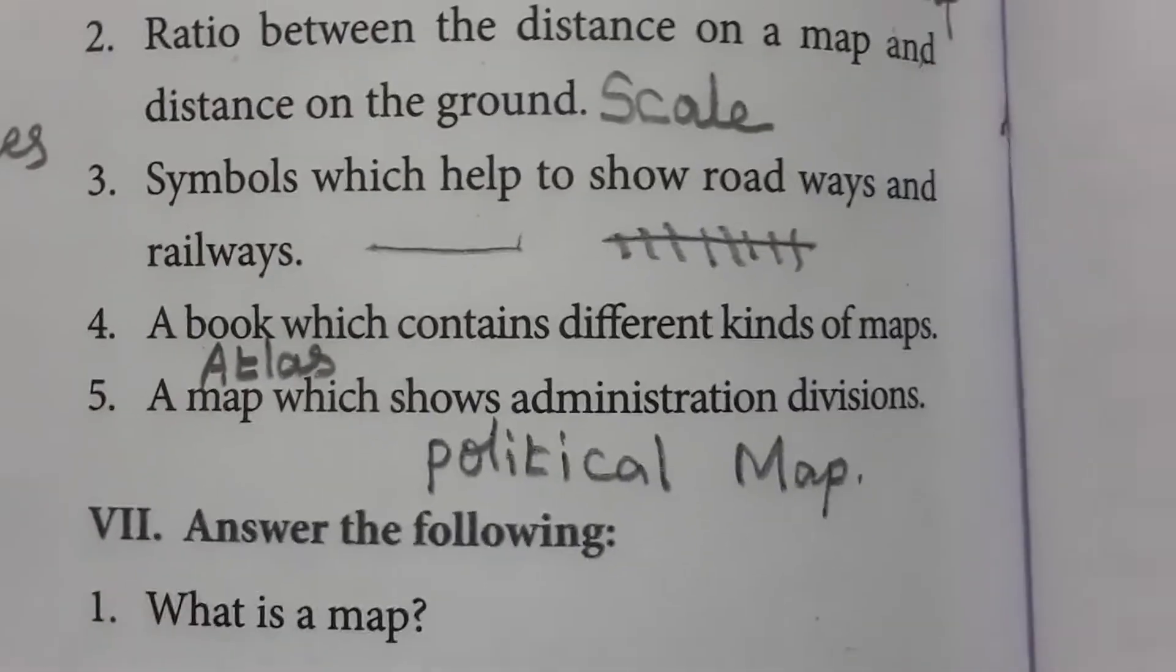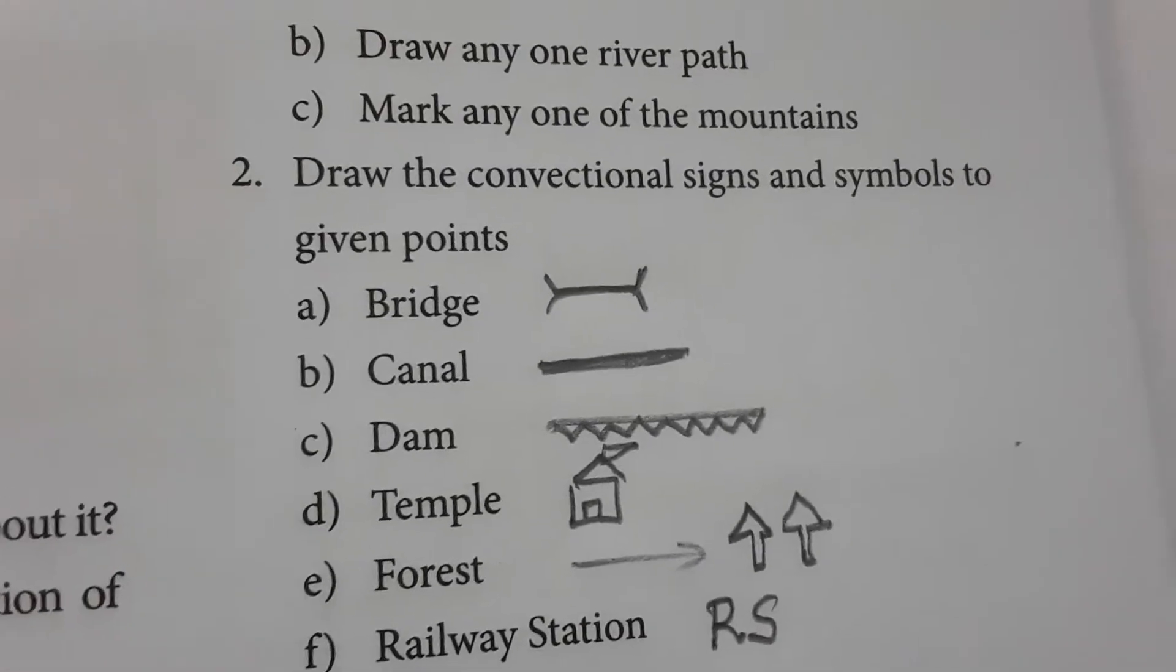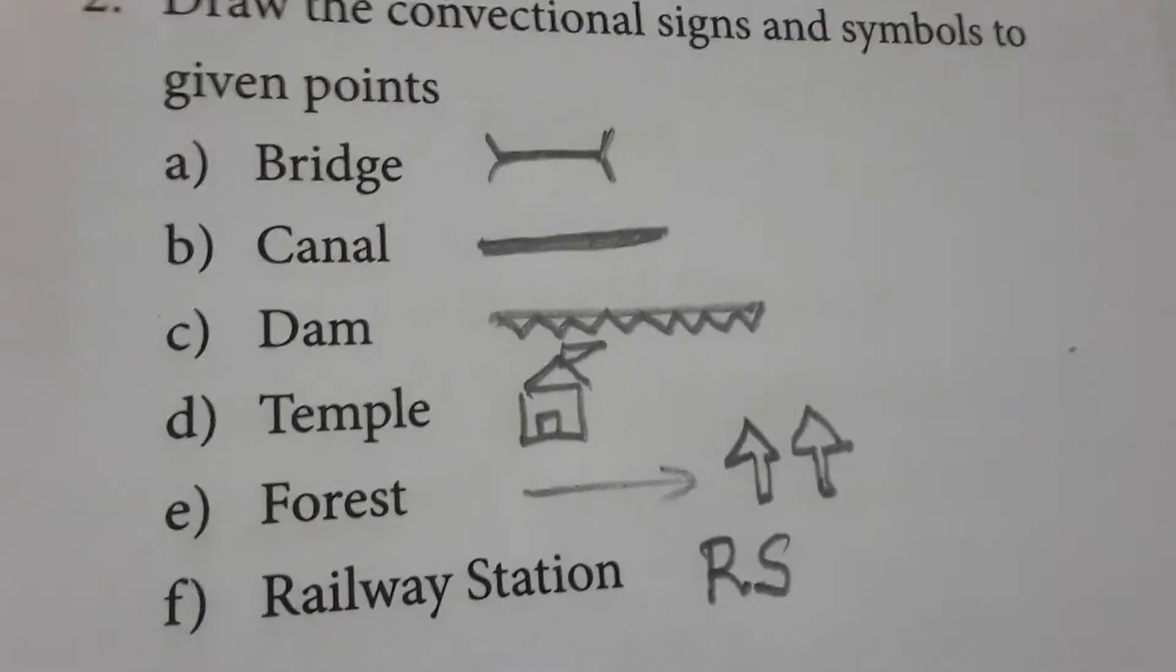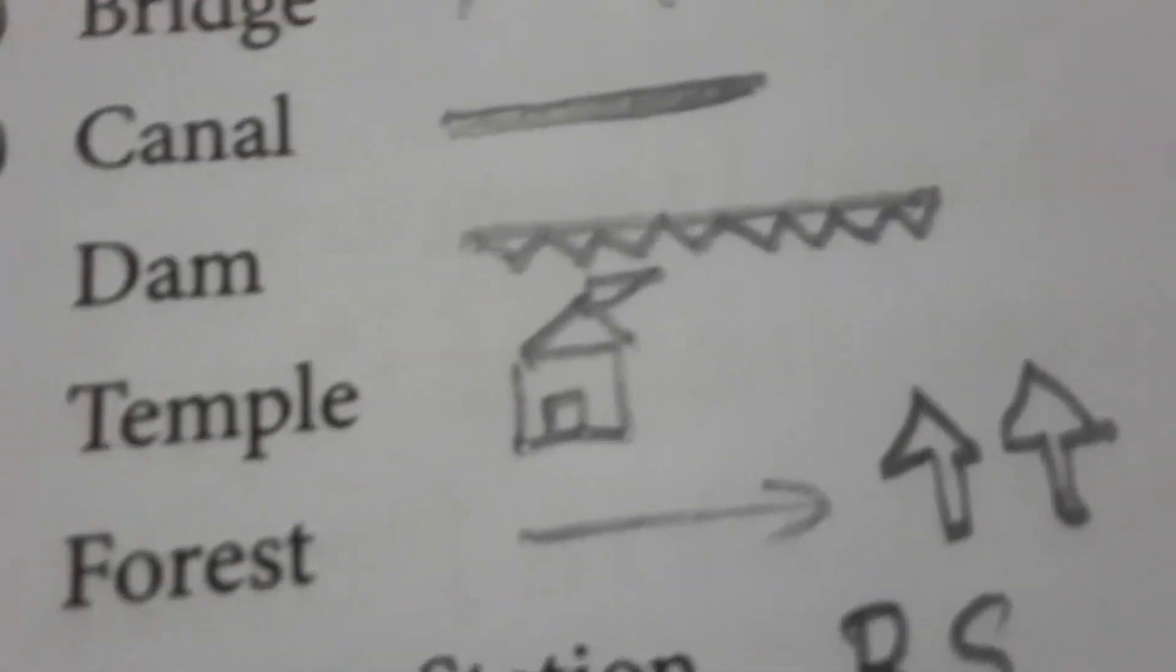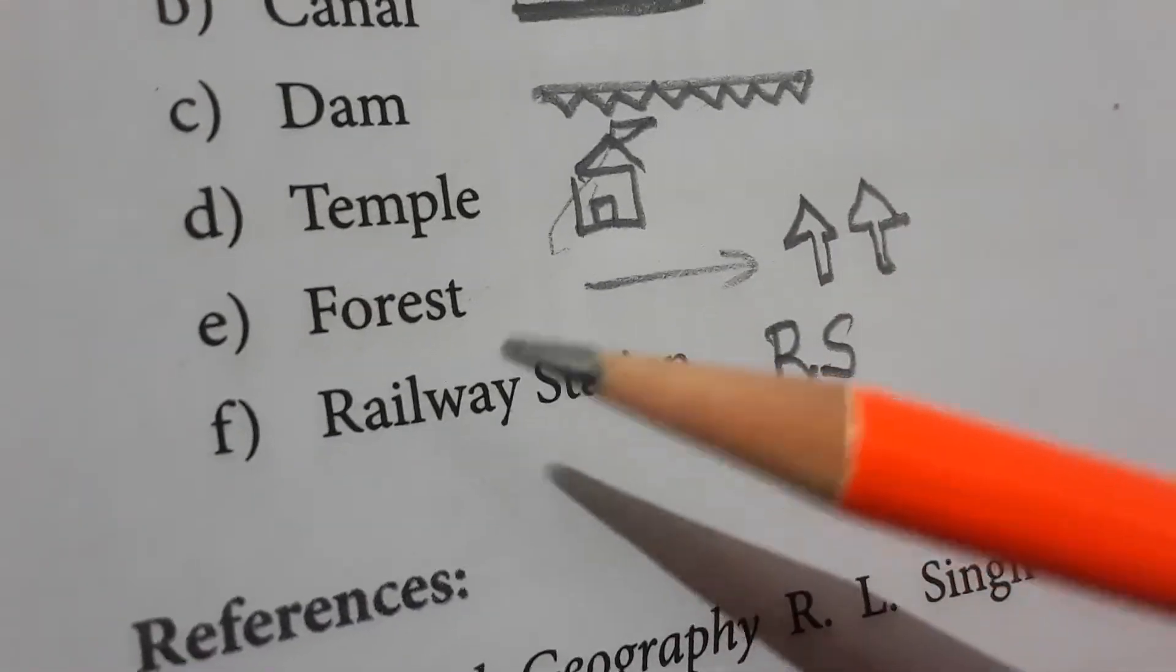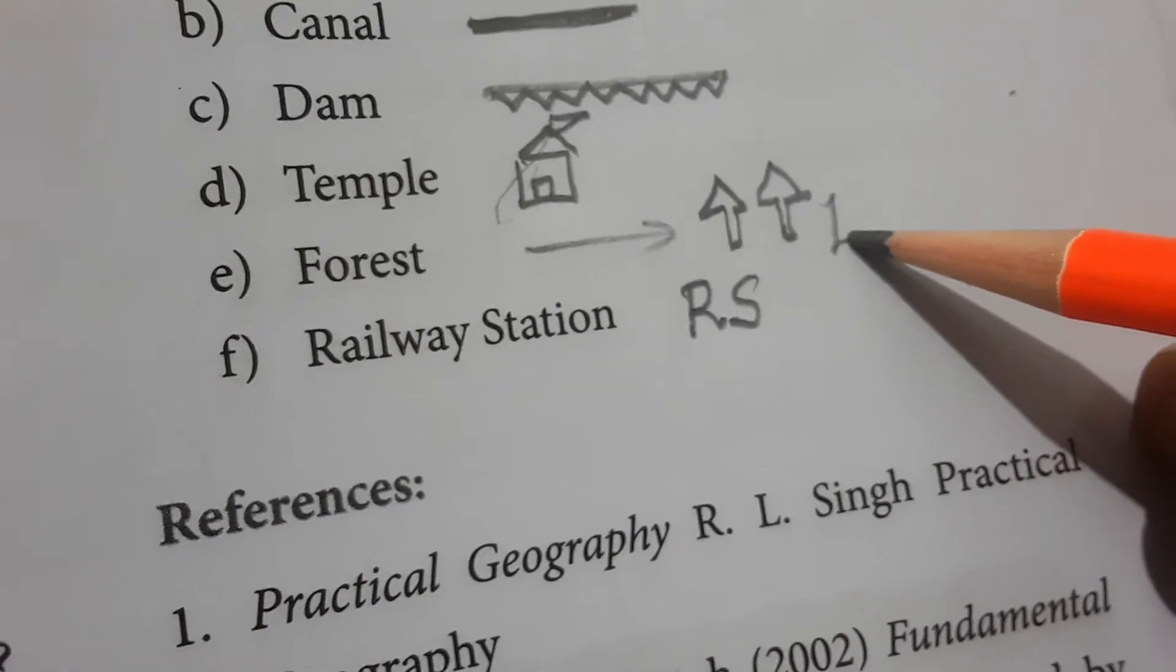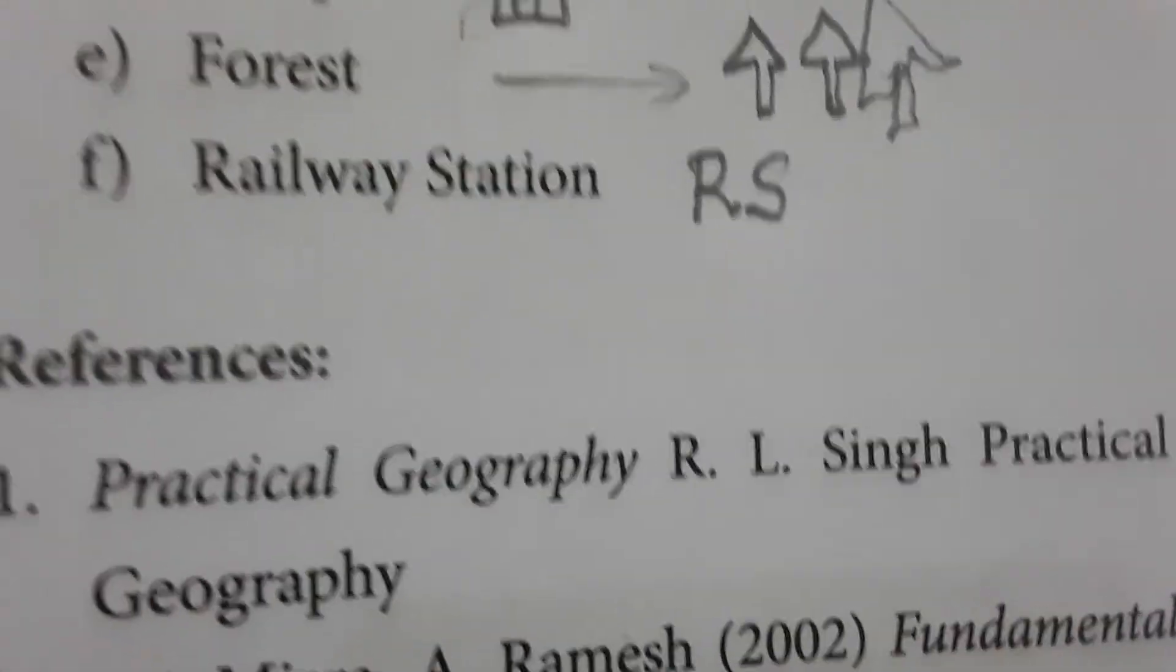Draw the conventional signs and symbols for the given points. Bridge looks like this. Canal is a bold straight line. Dam is this one. Temple is denoted by this picture. Forests are denoted by numerous upward arrows. Railway stations are denoted as capital R and capital S. That's all about the book pack evaluations from this lesson.